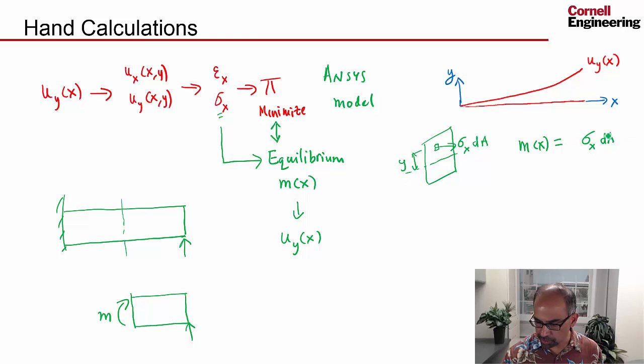So it's going to be y. I won't worry about the sign, but actually there's a negative sign. Then you have to integrate over the entire area, and this way you can relate the moment to the stresses. That's how this moment gets related to σx. Once I know σx, I can calculate εx and I can calculate uy(x).